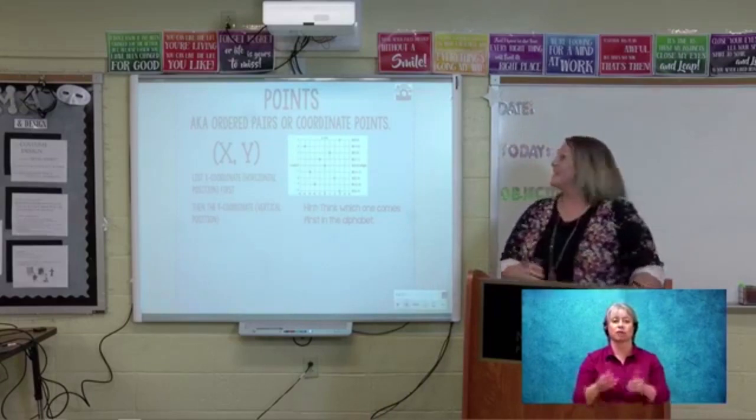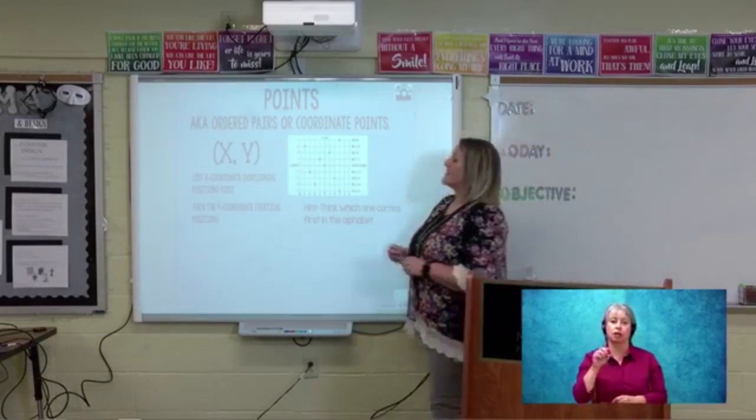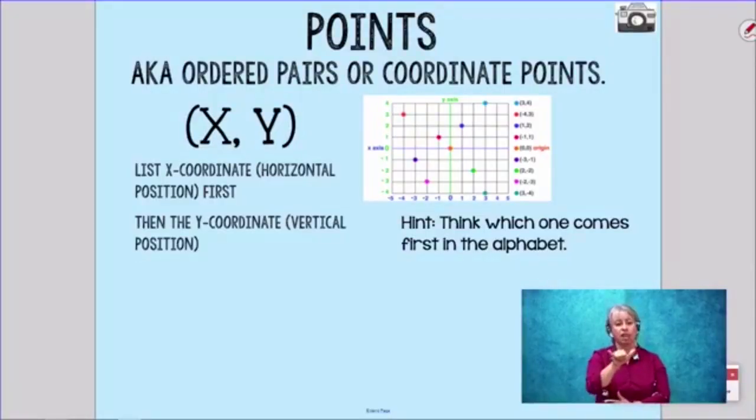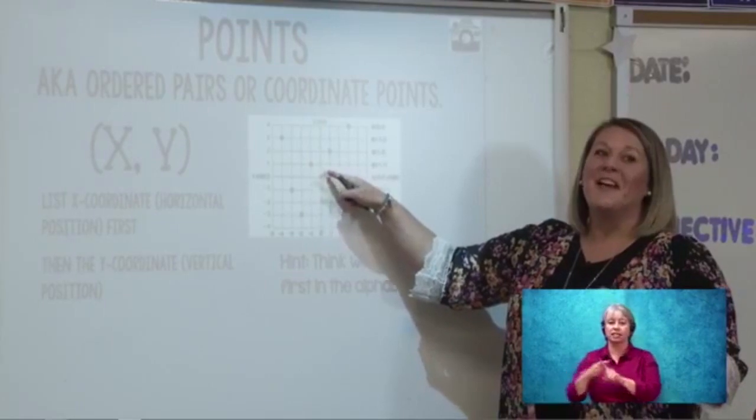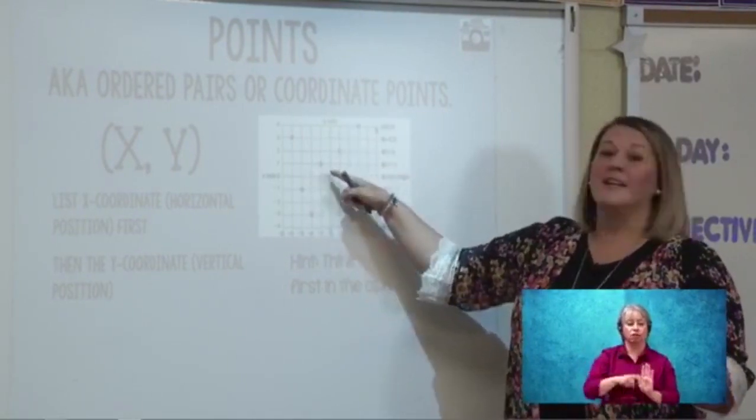Our next vocabulary word is points, also known as ordered pairs or coordinate points. Ordered pairs and coordinate points are listed x first, and then the y value. An easy way to remember that is if you think of the alphabet: X comes before y. X is the horizontal position and y is the vertical position on the coordinate plane. If you look at our picture, we have three, four - that would be three to the right and four up. On each axis, x and y, are number lines. The number lines are on the x axis: negative to the left, positive to the right, and in the dead center, that's zero. And on the y axis, it's positive going up, negative going down, and in the center, again, it's still zero.